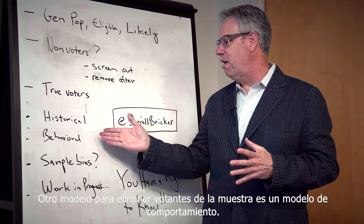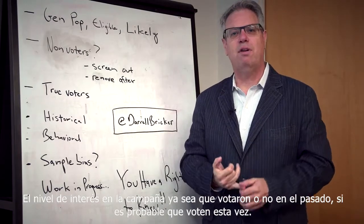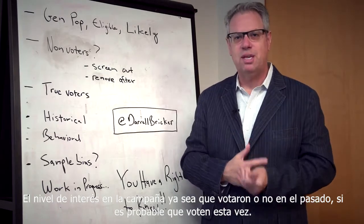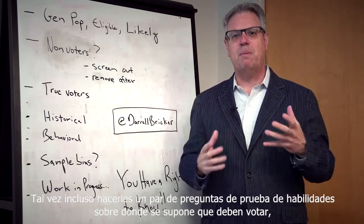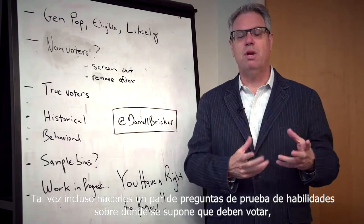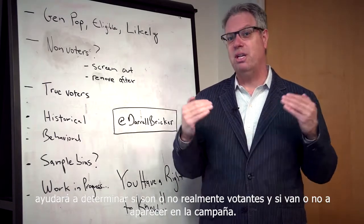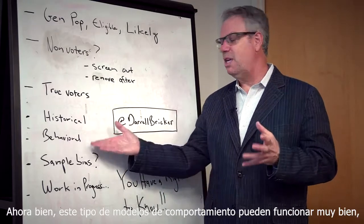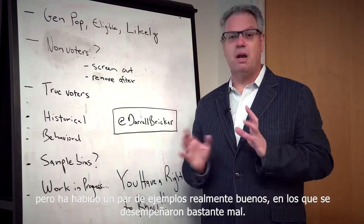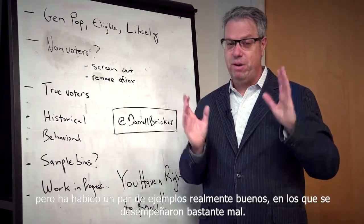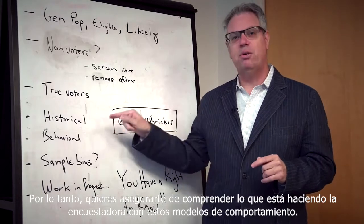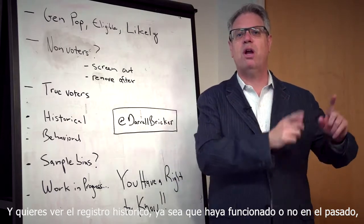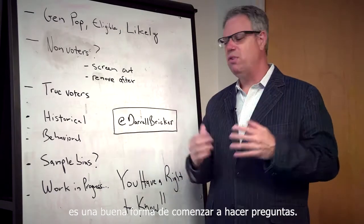Another model for identifying voters in the sample is a behavioural model: level of interest in the campaign, whether or not they voted in the past, whether they're likely to vote this time, and maybe even asking them skill-testing questions about where they're supposed to vote — all of this helps determine whether they're actually a voter and whether they're going to show up. These types of behavioural models can perform very well, but there have been examples where they've behaved quite poorly. So you want to make sure you understand what the pollster is doing and look at the historical record of whether it's worked in the past.